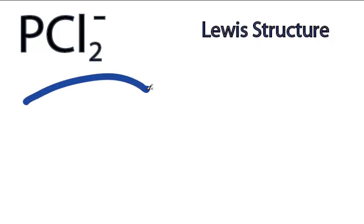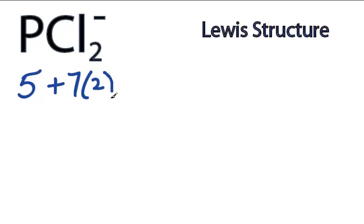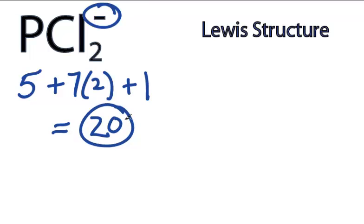This is the PCl2- Lewis structure. Phosphorus has 5 valence electrons, chlorine has 7, but we have 2 of those, and for the negative sign up here, we need to add another valence electron, for a total of 20 valence electrons.